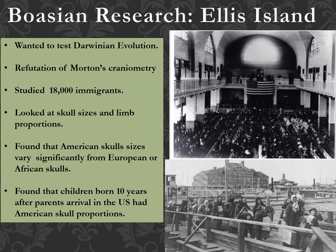Boas studied 18,000 immigrants, examining skull sizes and limb proportions as they entered Ellis Island. He found that American skull sizes varied significantly from European or African ones — American skull sizes were much larger. At the time, most anthropologists assumed larger skull size meant a bigger brain and therefore greater intelligence. Boas found that children born ten years after their parents' arrival in the US had American-sized skull proportions, showing that diet determines skeletal proportions.